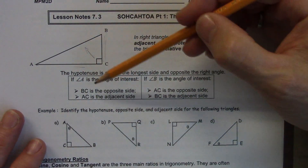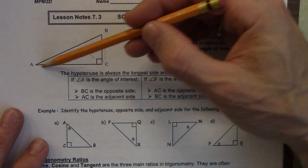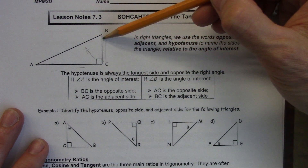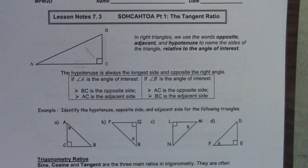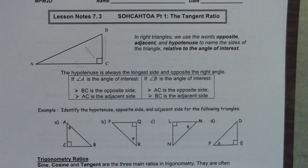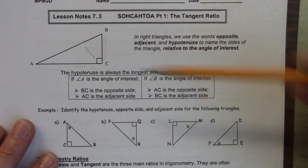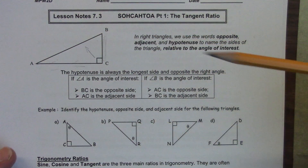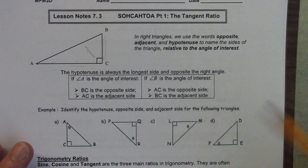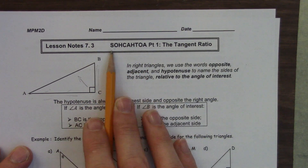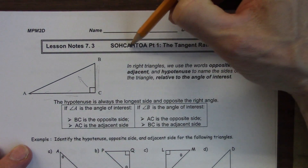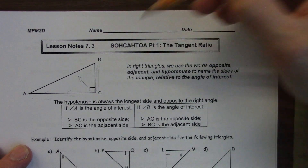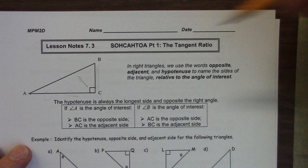If angle A is the angle of interest, BC is the opposite and AC is the adjacent. If angle B is the angle of interest, AC is the opposite and BC is the adjacent. In SOH-CAH-TOA, O stands for opposite, H for hypotenuse, and A for adjacent. We'll talk about what S, C, and T stand for shortly.